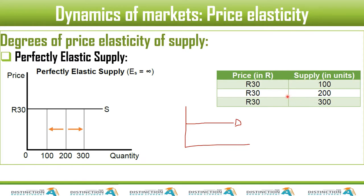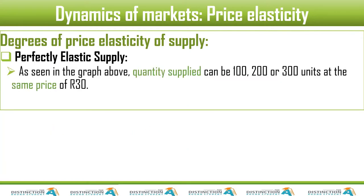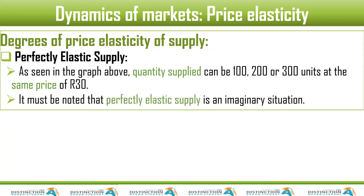This is a supply schedule — we did this in grade 10. It shows the different price levels. But look — quantity here is changing while price stays constant. So we can say this is perfectly elastic. As seen in the graph, quantity supplied can be 100, 200, or 300 — it can even be more. The price remains the same at 30 rands, so we say it's perfectly elastic.